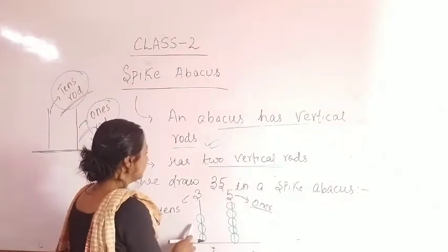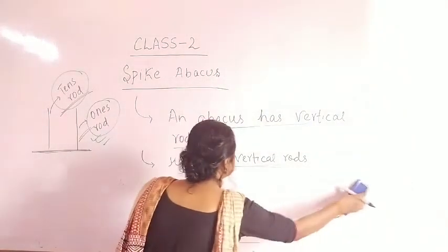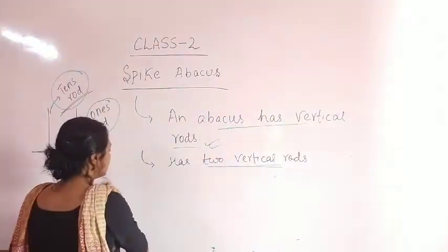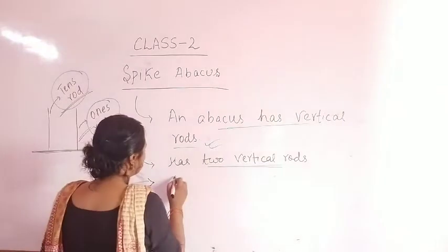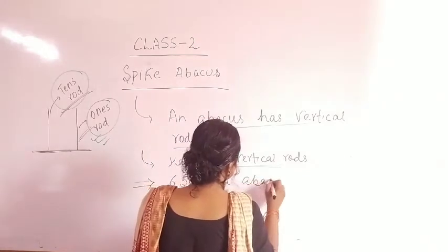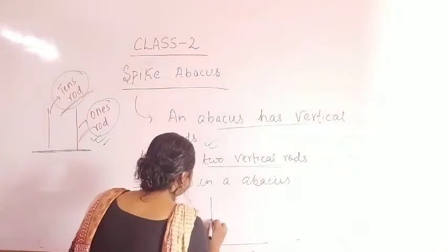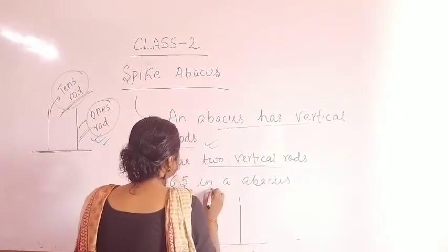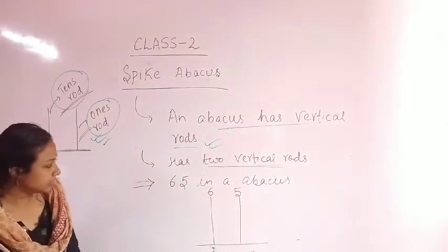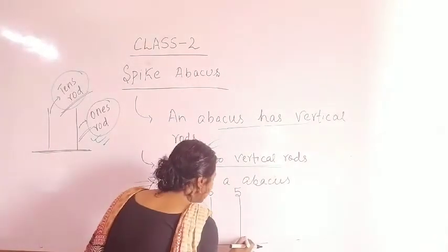This is the spike abacus. Let's take another example: 65. We draw one horizontal line, two vertical lines, and represent 65. We place 6 in the 10's place and 5 in the 1's place.